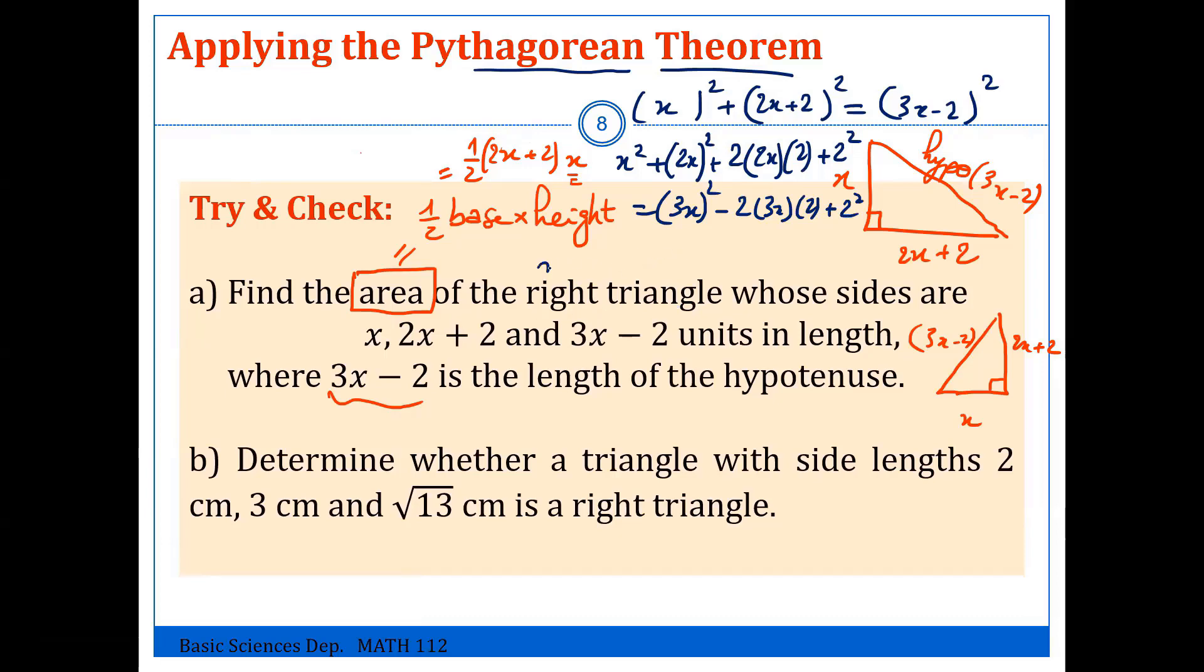we calculate and simplify: x squared, 4x squared, 2 times 2 times 2 is 8x, plus 4 equals 9x squared minus 2 times 3 is 6 times 2 is 12, plus 4. It's a quadratic equation,